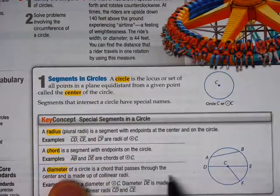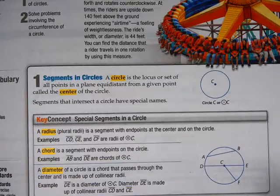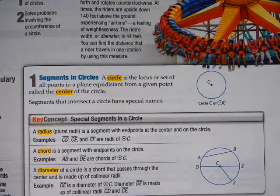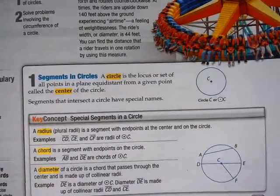The diameter is a chord that passes through the center. Made of a collinear radii. So I think that, on the most part, is going to be pretty straightforward.